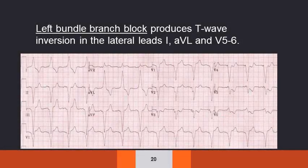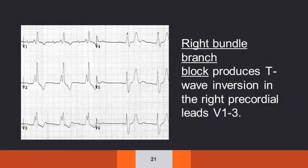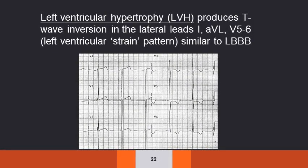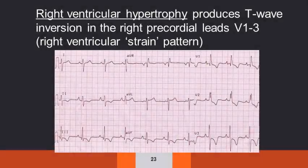Left bundle branch block produces T wave inversion in the lateral leads — leads 1, AVL, V5, and V6. Right bundle branch block produces T wave inversion in the right precordial leads V1 to V3. Left ventricular hypertrophy also produces T wave inversion in the lateral leads similar to left bundle branch block, but here a left ventricular strain pattern is also seen. Right ventricular hypertrophy produces T wave inversion in the right precordial leads V1 to V3, similar to right bundle branch block.